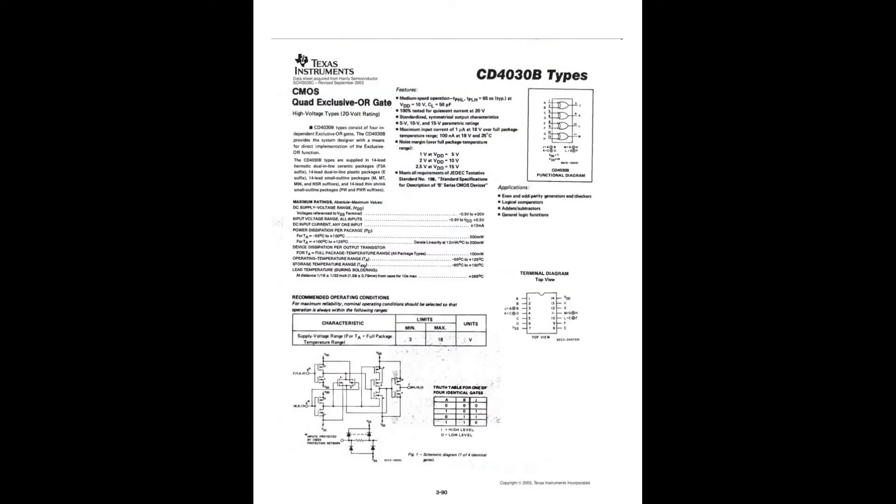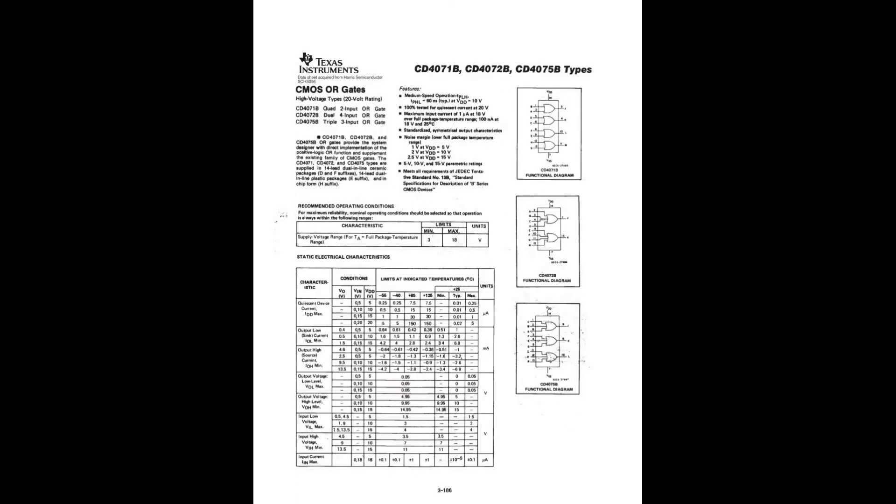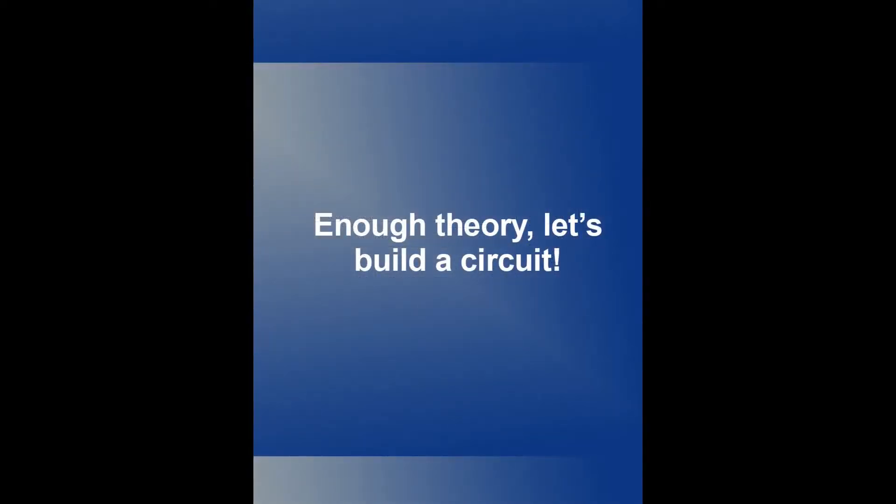So we have the data sheet for one of the components, specifically the exclusive OR gate or XOR gate. It's a quad XOR gate, the CD4030B. Similarly for the quad AND gate, we use the 4081B. And we use the CMOS OR gates, another quad module, the CD4071B. So enough theory, let's build a circuit.